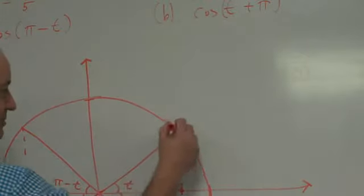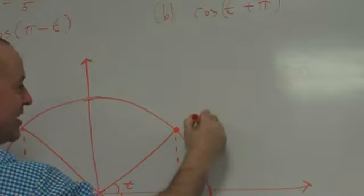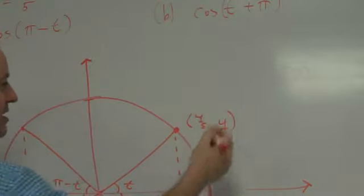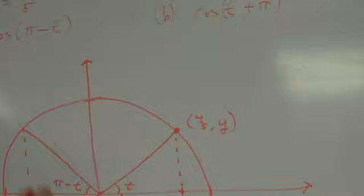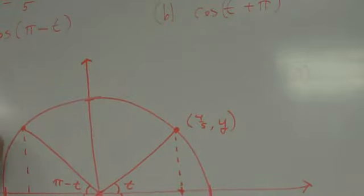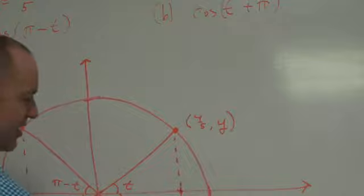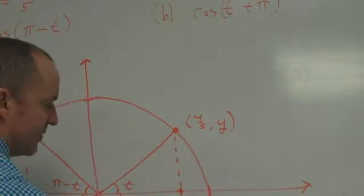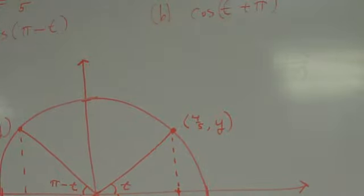Now, so this is going to be the point four-fifths, comma, some y, I don't care about. You can find it, but that's not in this chapter. Over here is going to be negative four-fifths, positive y. Down here is going to be negative four-fifths, negative y. And over here is going to be positive four-fifths, negative y. The point is, if you know the cosine of this angle, then you know the cosine of this angle, this angle, and this angle.